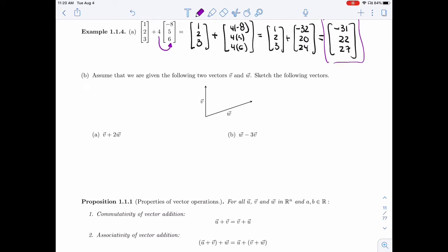All right, in Part B, we're doing a more geometric picture. Assume that we're given the following two vectors V and W. I want to sketch different combinations of them.